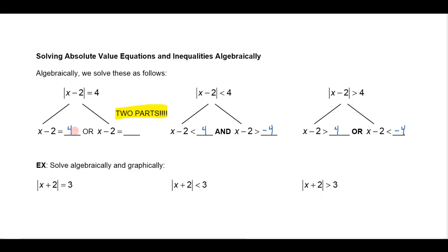If it was equals 4, you reverse it and you still get an equals, putting a negative 4. Now the only additional thing to remember is: if the original is a less than, you put the word 'and' between the two parts; if it's a greater than, you put the word 'or' between them. The 'or' makes it a union — a disjunction — and the 'and' makes it a conjunction or compound inequality.